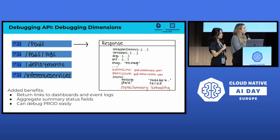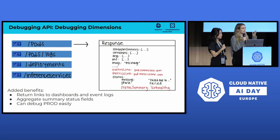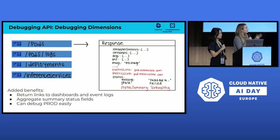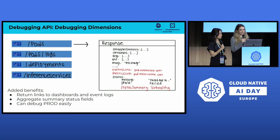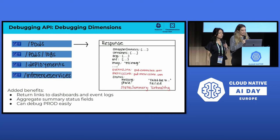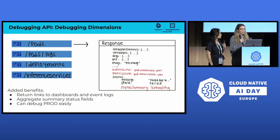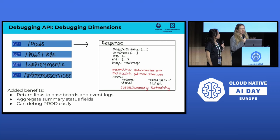Here are some examples of endpoints in our debugging API. We can get pods, logs, deployments, and any abstraction resource on top — for us, a resource called Inference Service that has different status and information about the Inference Service deployment as a whole. The example response is very similar to kubectl get pods YAML output, with some additions: customized debugging links for each endpoint, and a new status summary field that aggregates all statuses into one consistent output. At our company, we have strict restrictions on viewing production, so this API removes steps and makes it much easier to securely debug production.